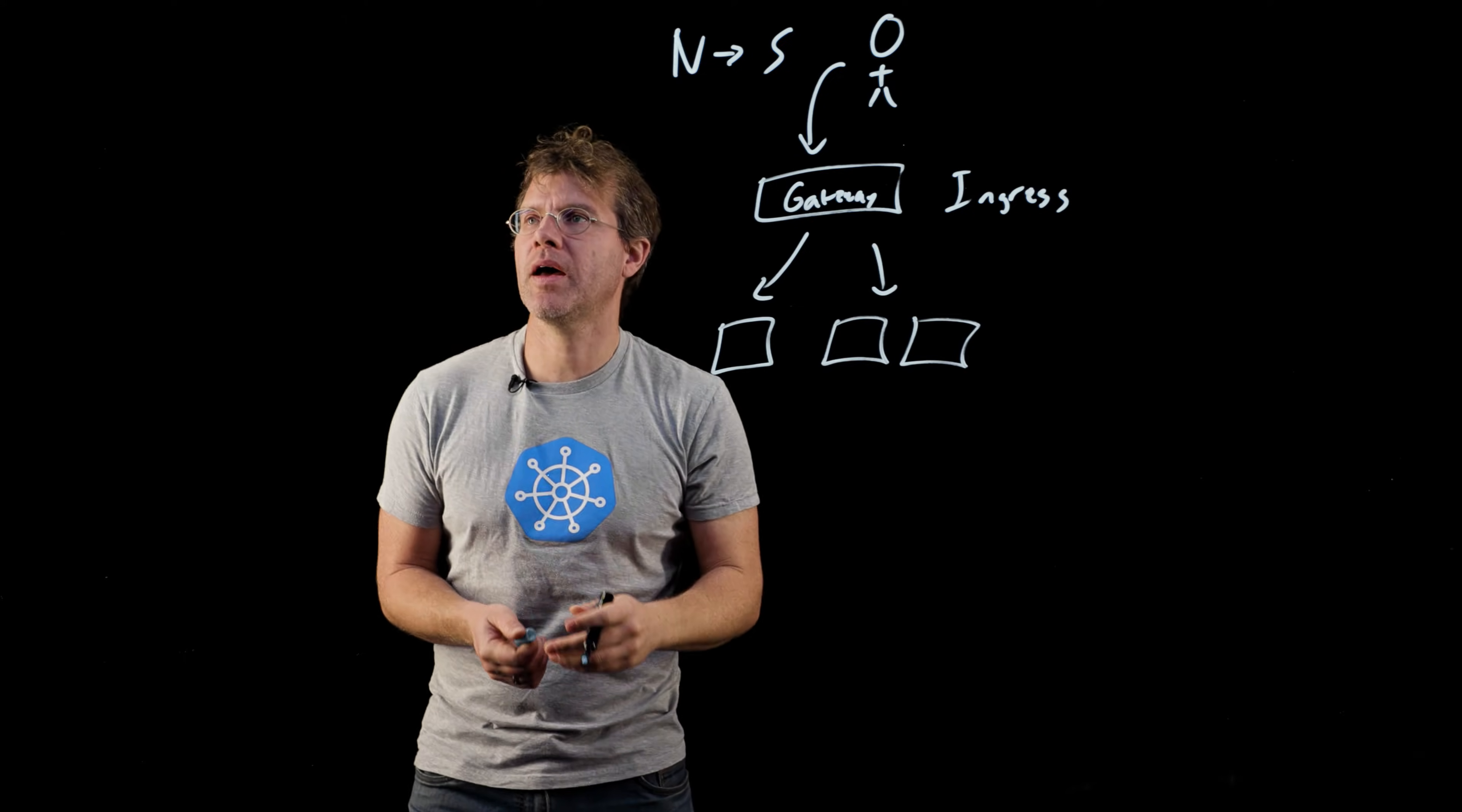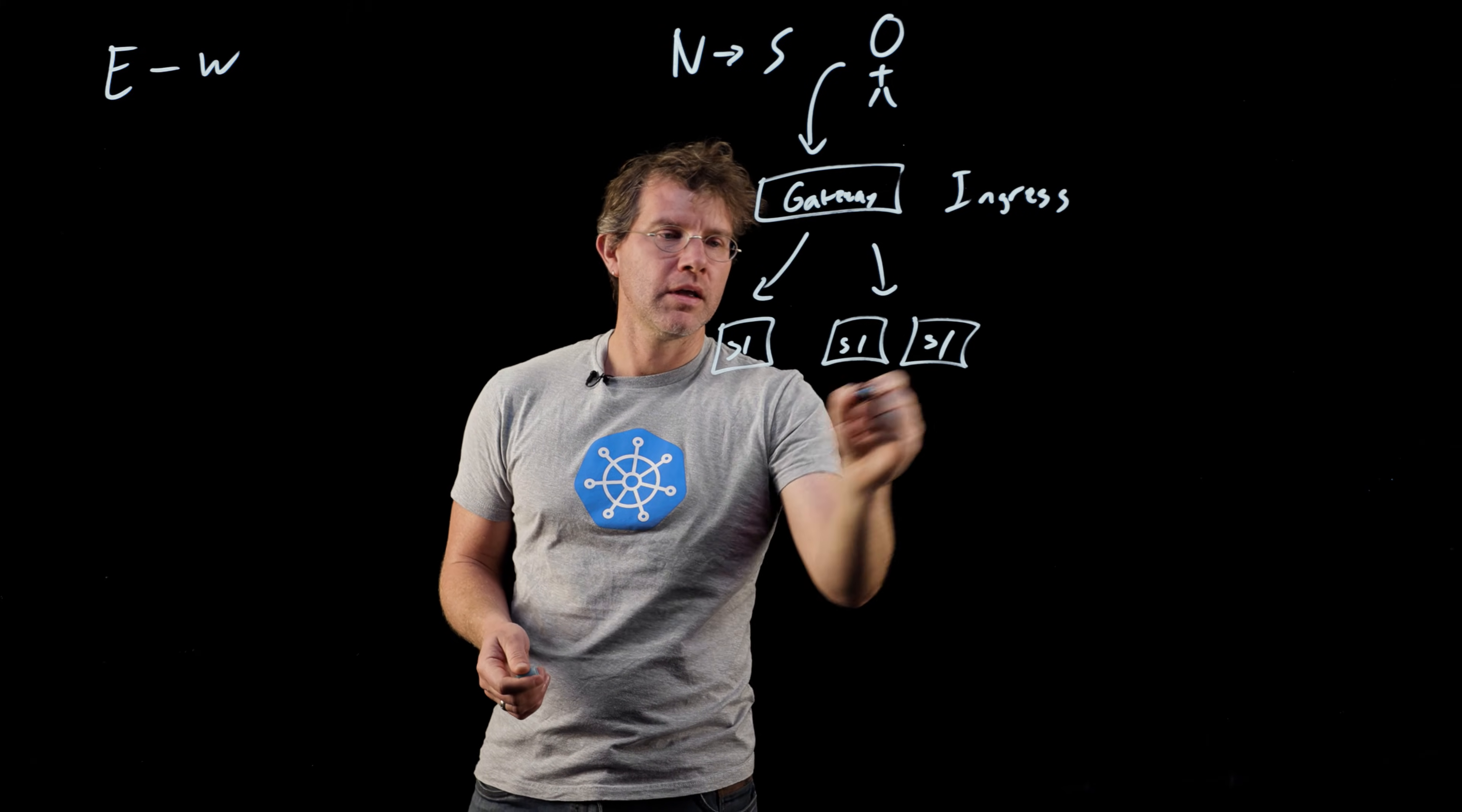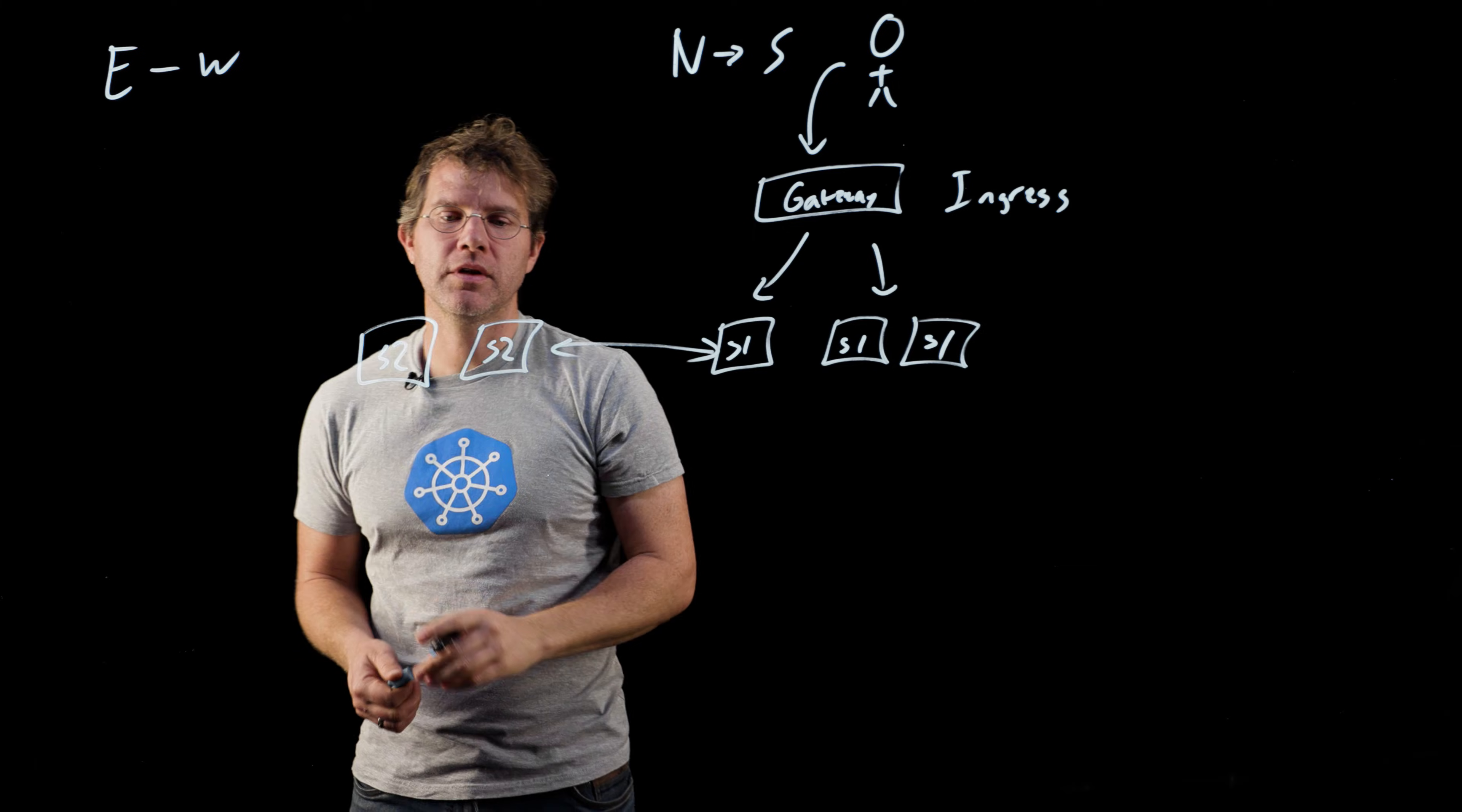What a Service Mesh is actually talking about is more like east-west load balancing, which means I have a service here, S1, and I want to talk to some other service, S2. How do I make traffic go between those two things?